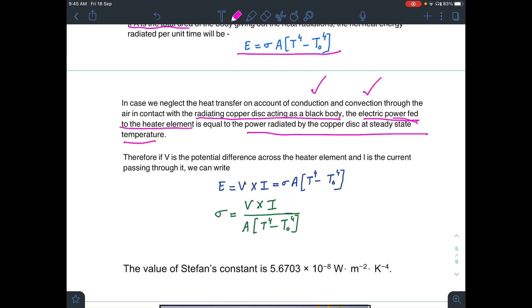What is steady state temperature? The steady state temperature will be the temperature of the black body at which the radiation received by the body is equal to the radiation emitted by the black body.